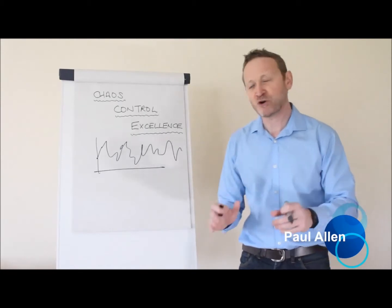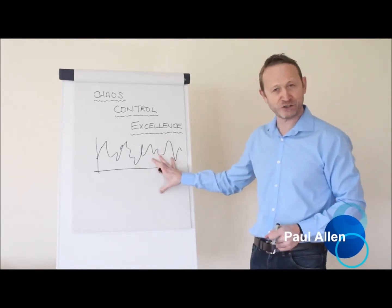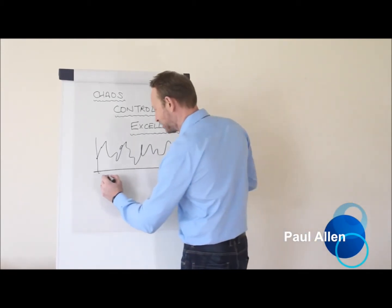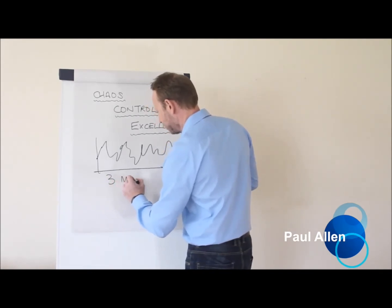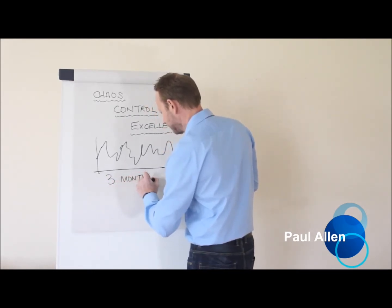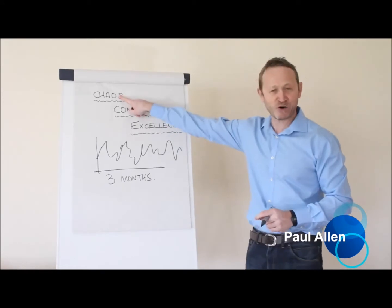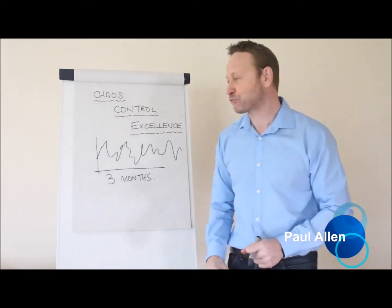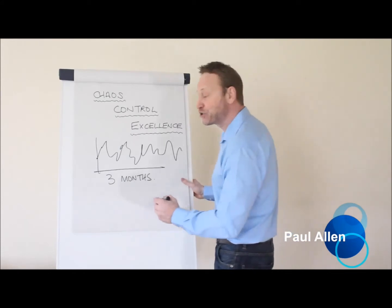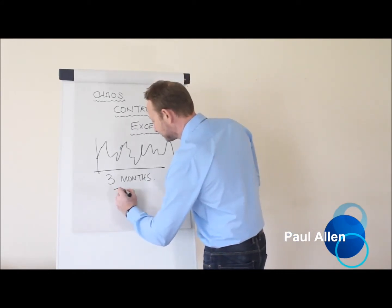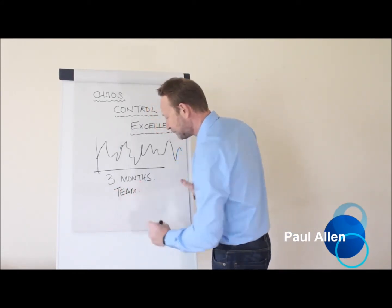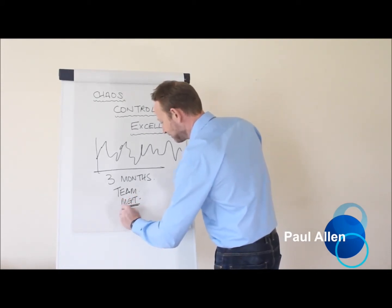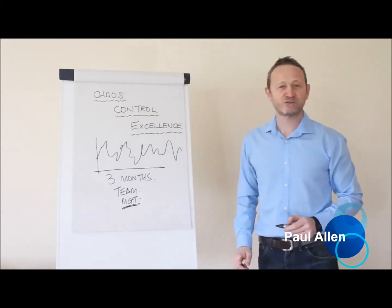If you take a project on when the process looks like this, this problem is going to take three months to fix. To take a process from chaos to control is going to take three months. It's going to need a team, and it is management's responsibility to sort it out.